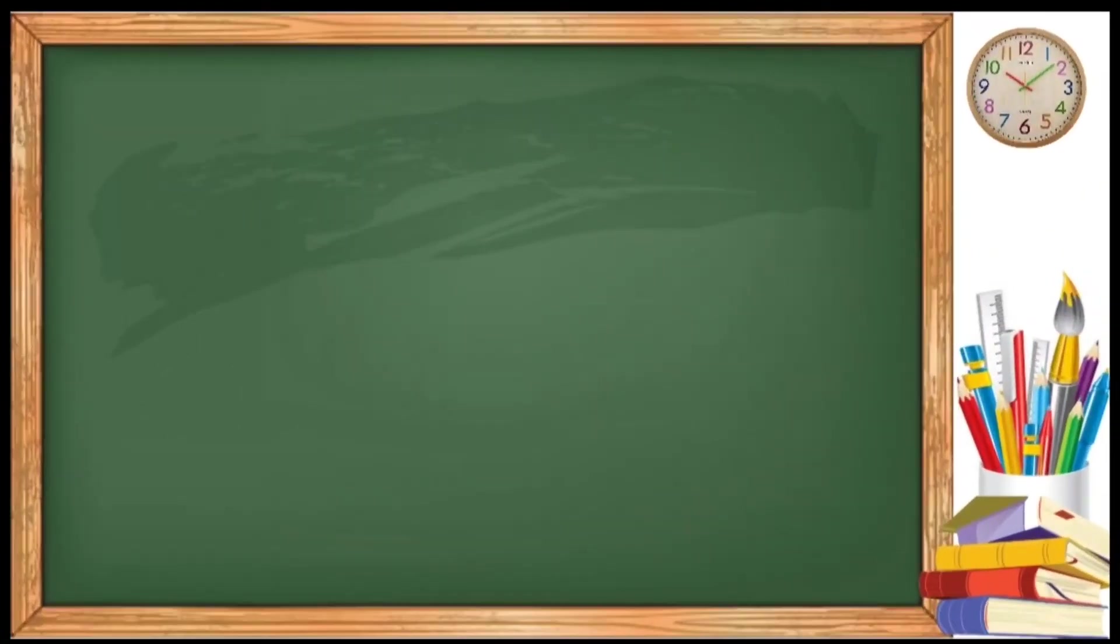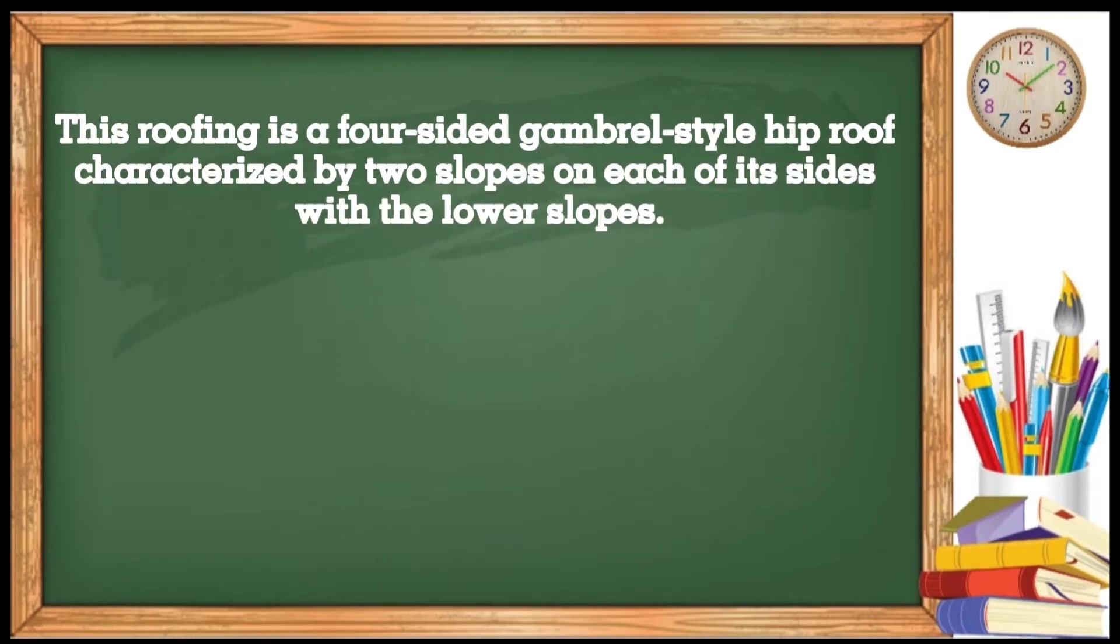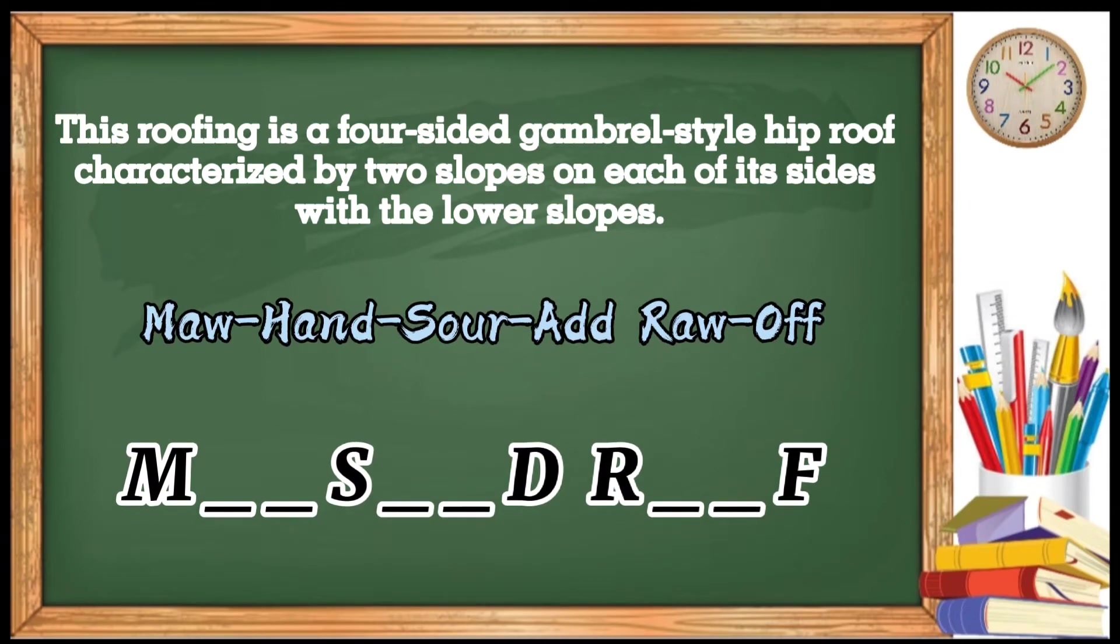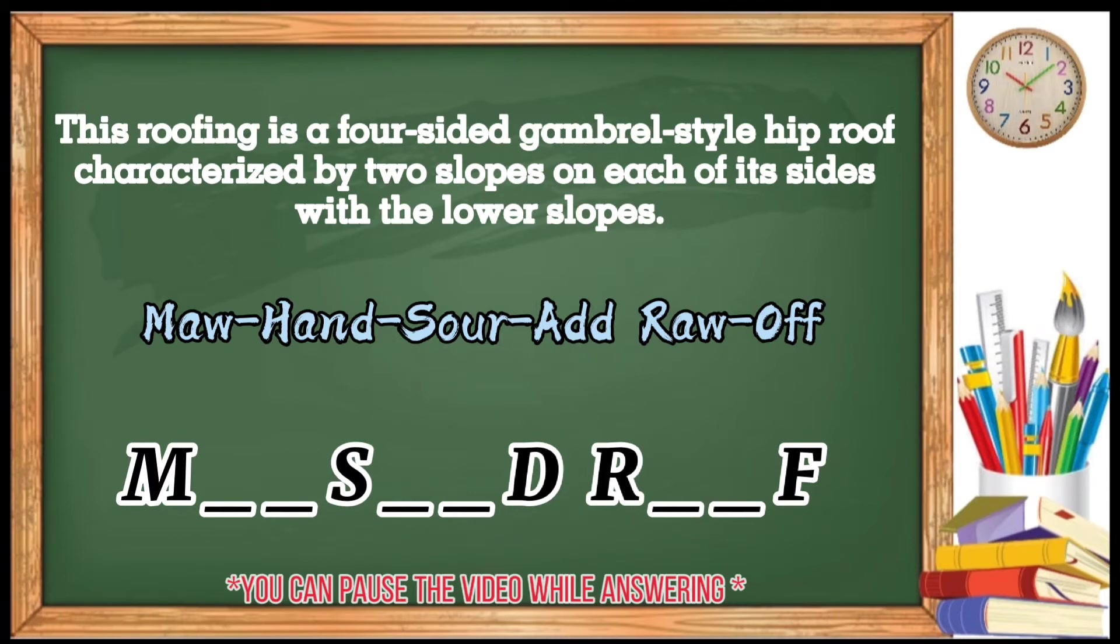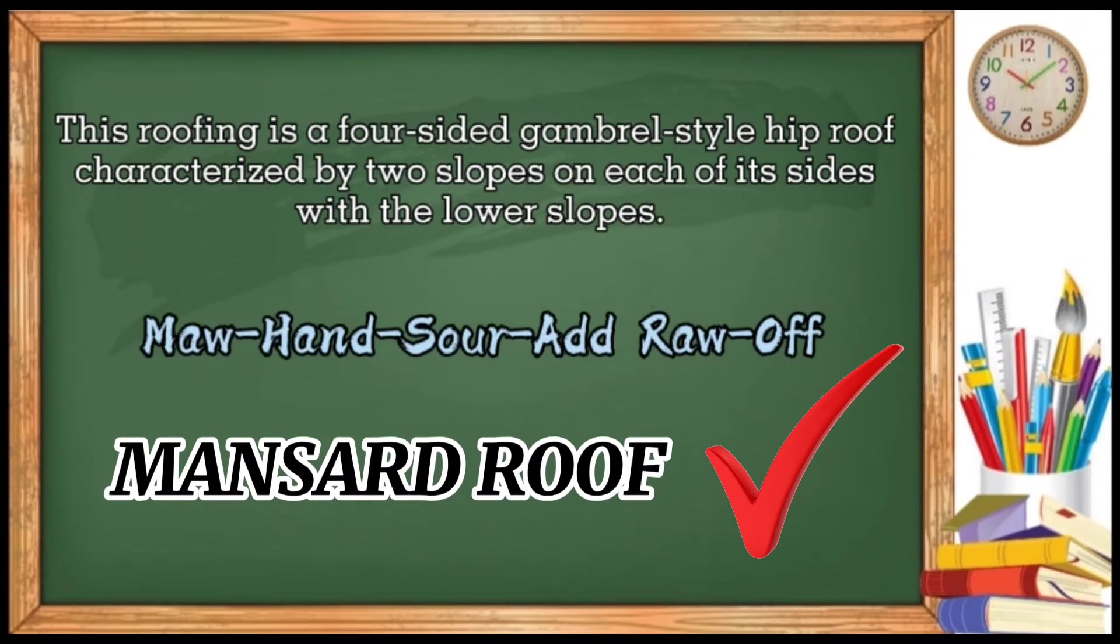Next statement. This roofing is a four-sided, gambrel-style hip roof characterized by two slopes on each of its sides with the lower slope. Here is the clue. Mohan, sar, ad, row, off. Mohan, sar, ad, row, off. Can you guess what is the answer? Very good! This is a mansard roof.